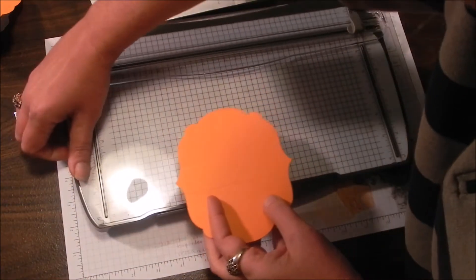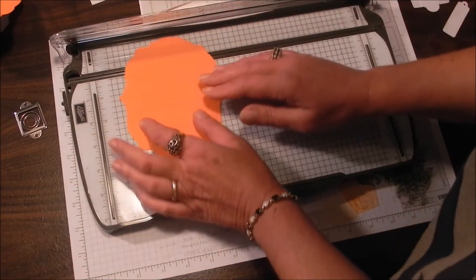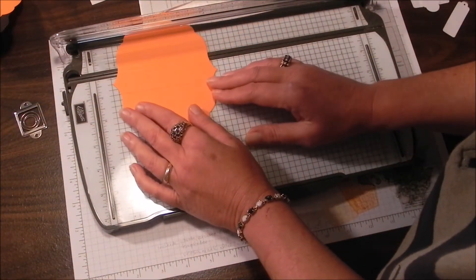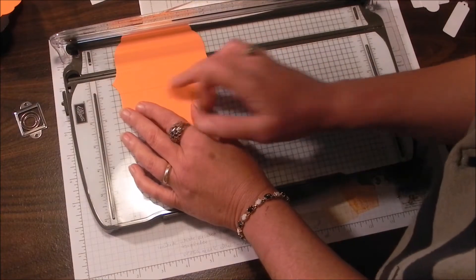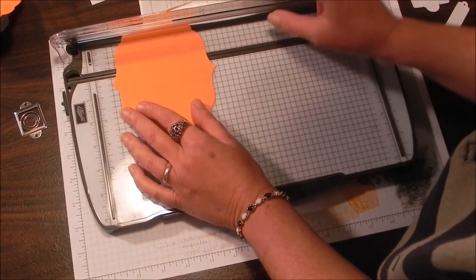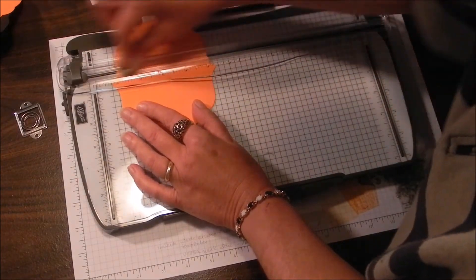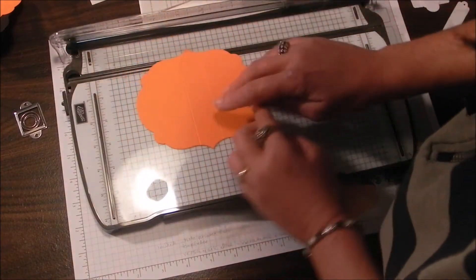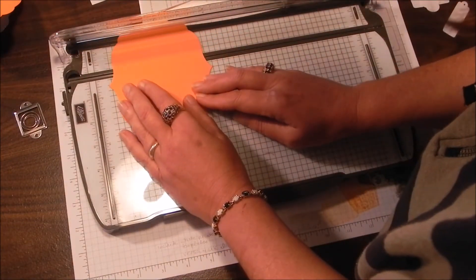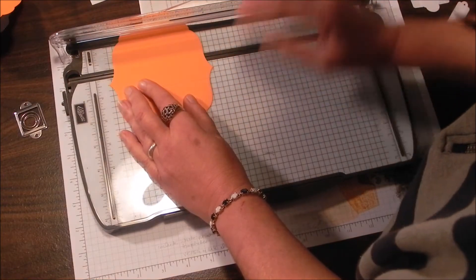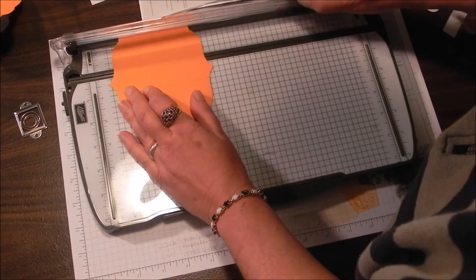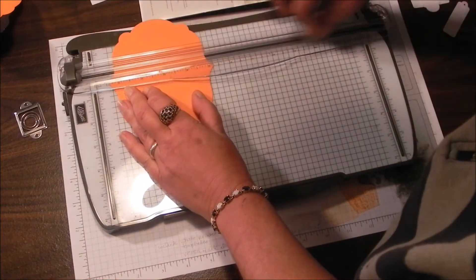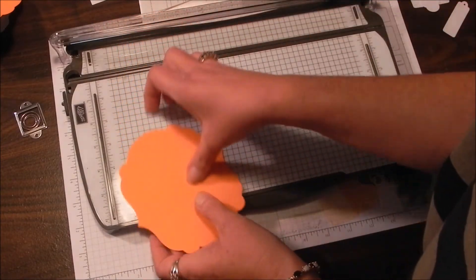I'm going to grab my paper trimmer and put this at half an inch at the center point, and then I'm just going to go ahead and score. Then I'll flip it over and do exactly the same thing. When you've got a center point marked as clearly as this, that makes it easy.